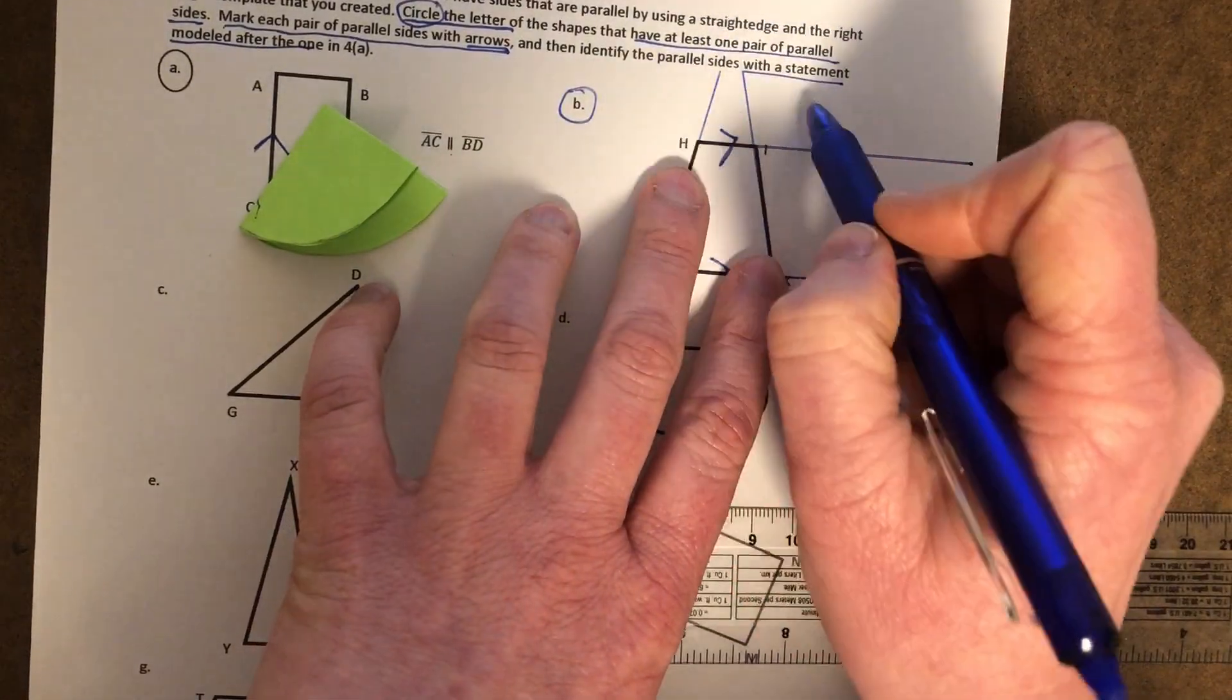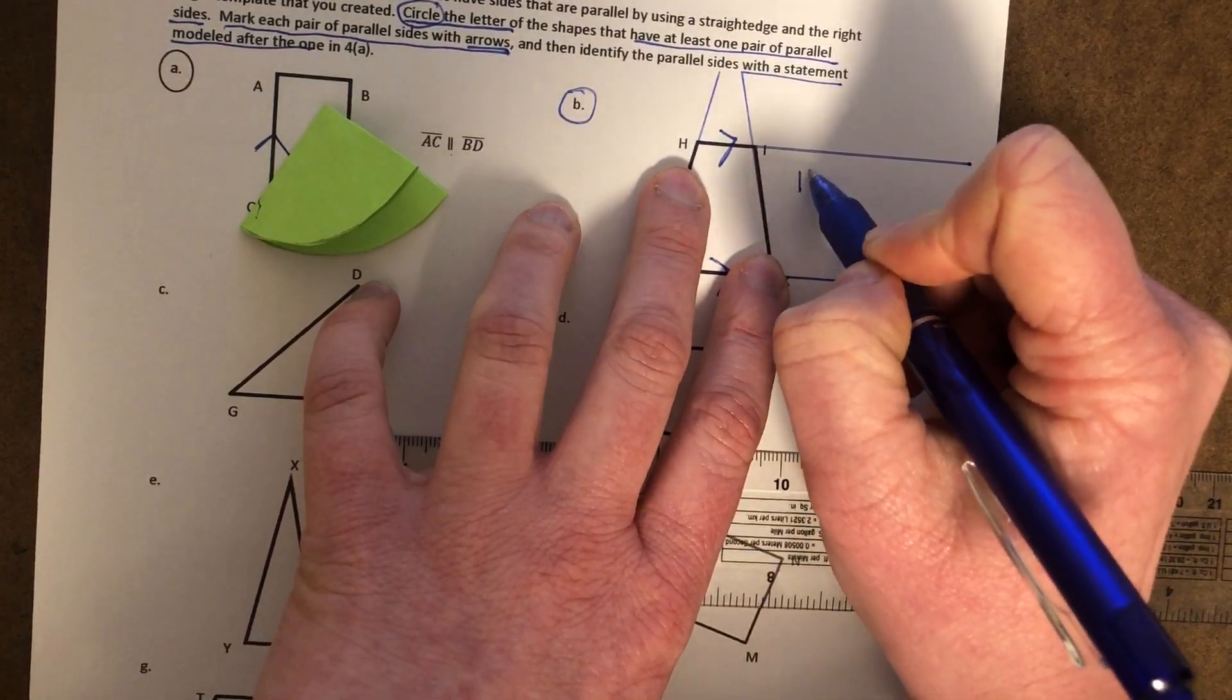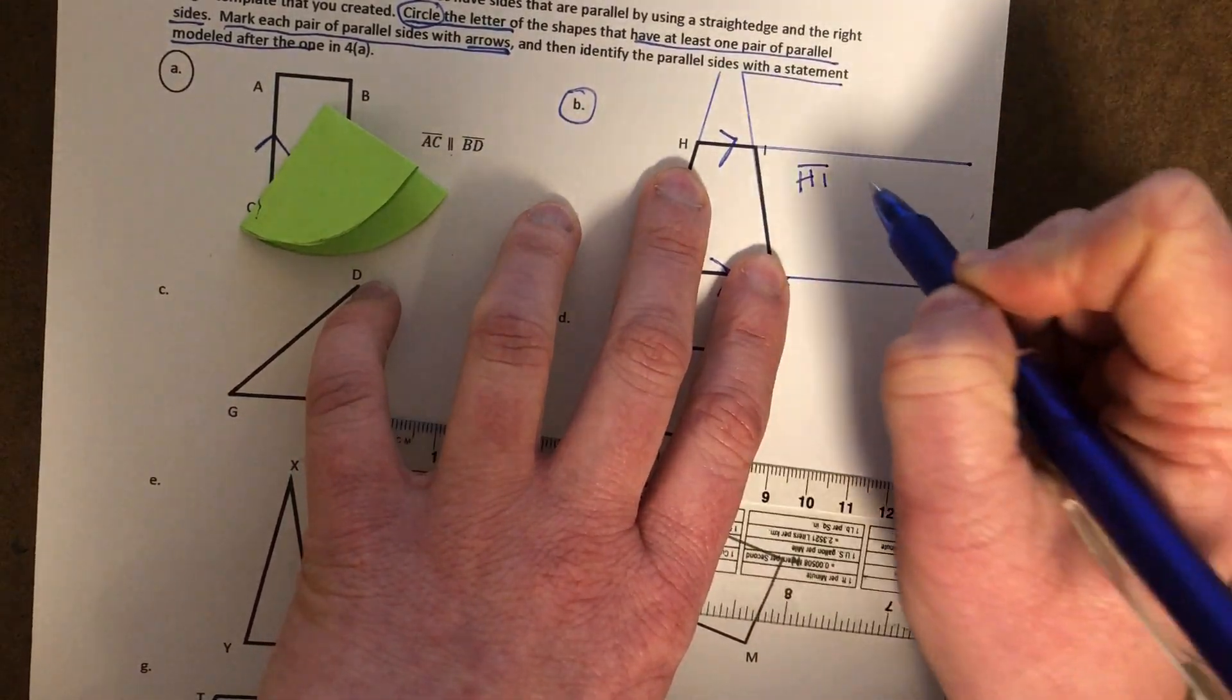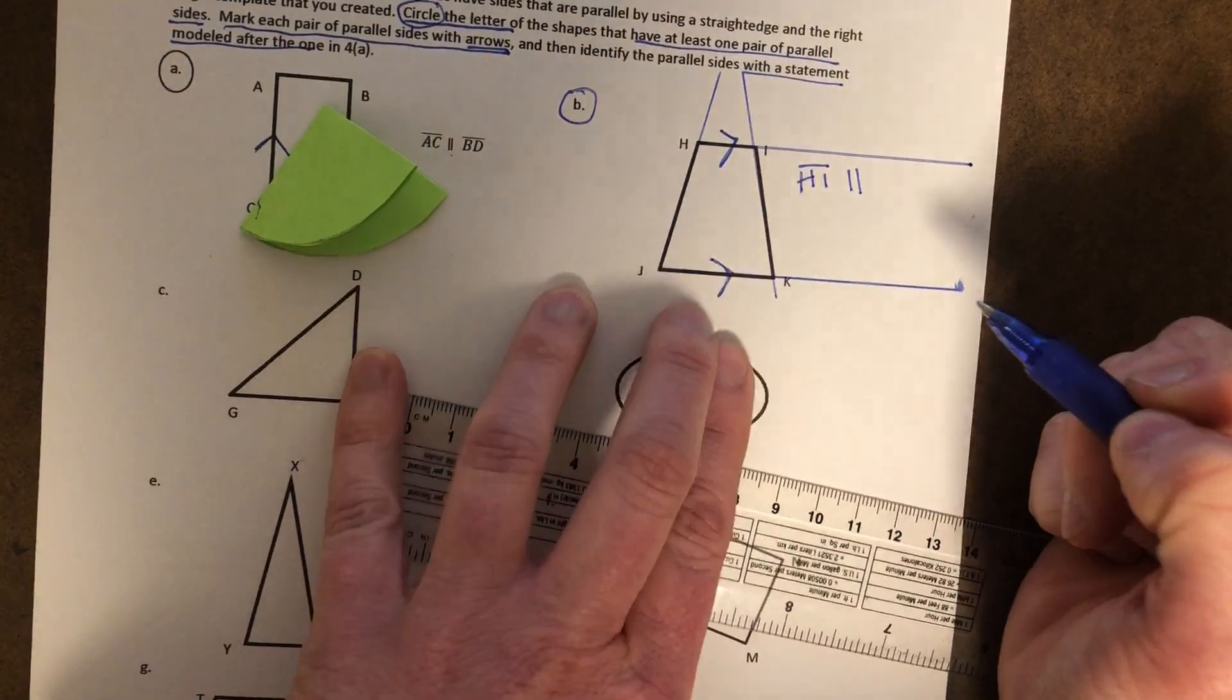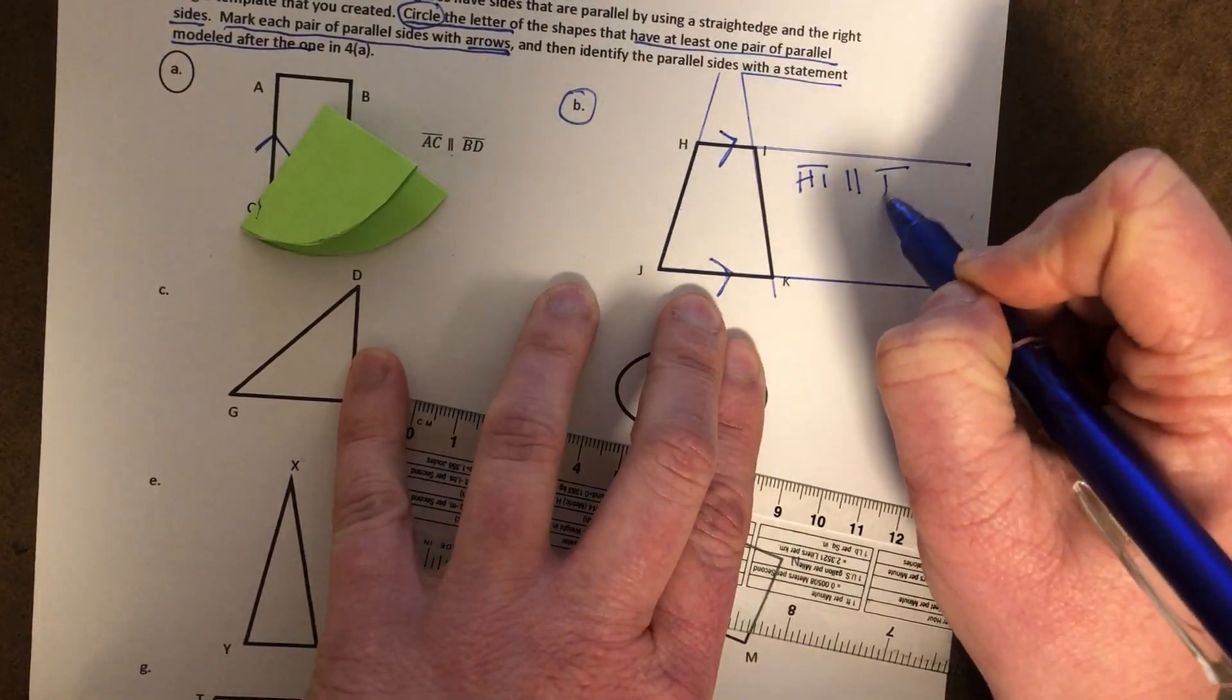And then let's name them with the statement. So line segment HI is parallel to line segment JK.